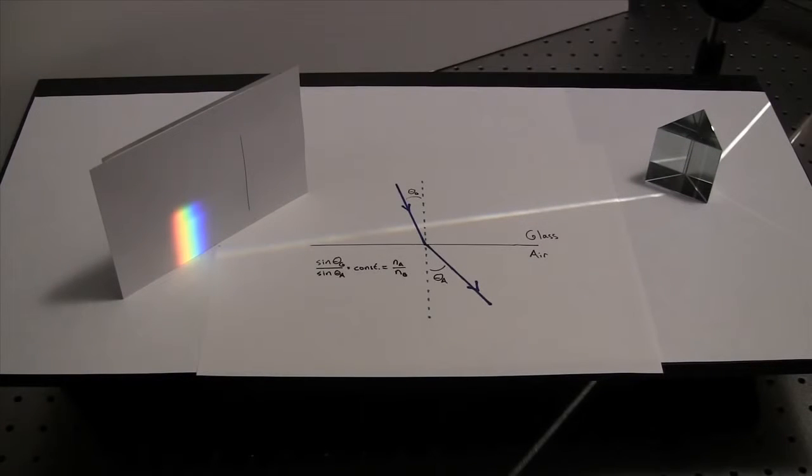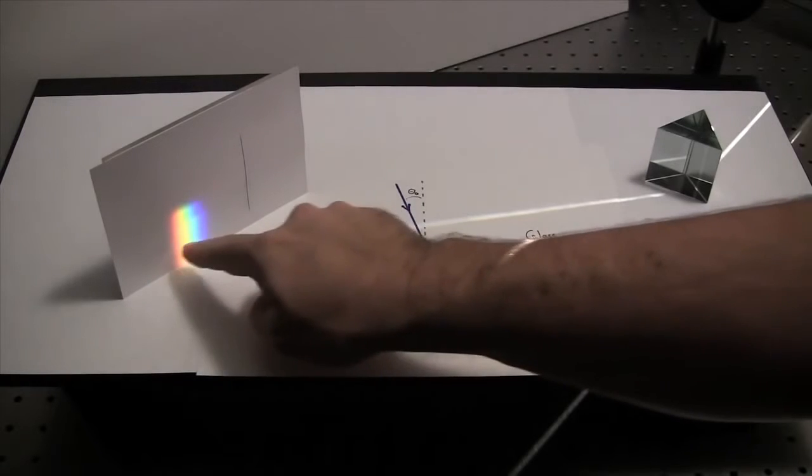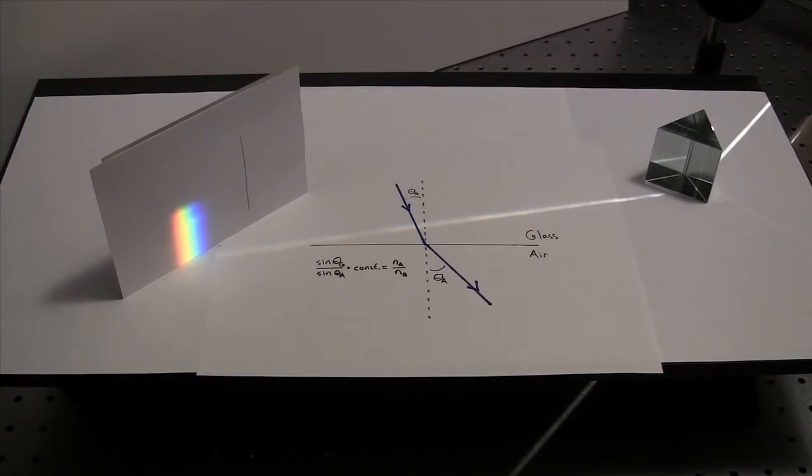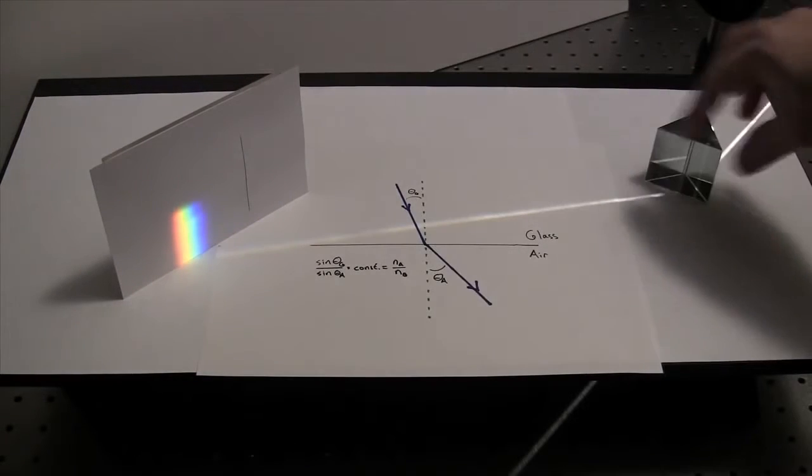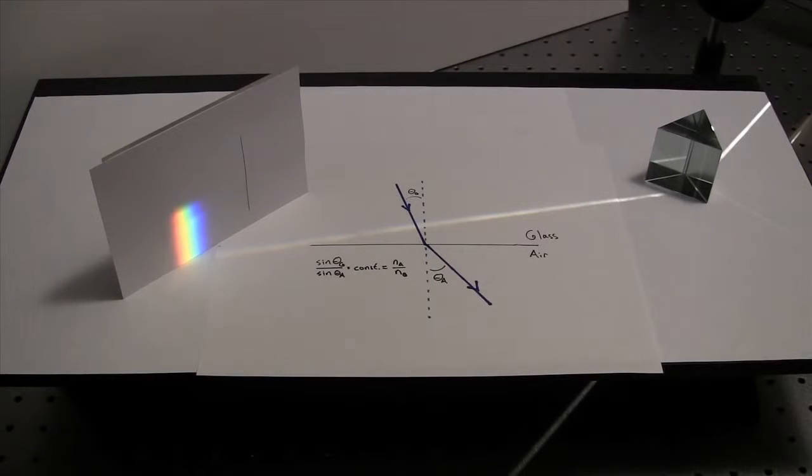So he did some experiments. He separated out individual colors in the spectrum and passed them through additional prisms. And what he came to realize was that all the colors in this spectrum are their own form of light, and they all experience a different refractive index on traveling through these prisms.